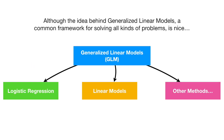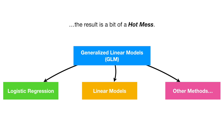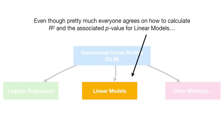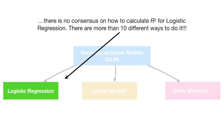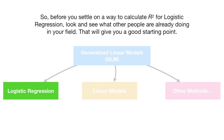Although the idea behind generalized linear models, a common framework for solving all kinds of problems, is nice, the result is a bit of a hot mess. Even though pretty much everyone agrees on how to calculate R squared and the associated p-value for linear models, there is no consensus on how to calculate R squared for logistic regression. There are more than 10 different ways to do it. So before you settle on a way, look and see what other people are already doing in your field — that will give you a good starting point.